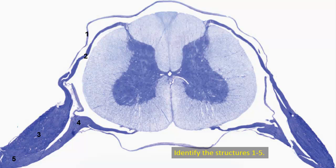Identify structures 1 to 5. This is a section of the spinal cord surrounded by the thick layer of dura mater, labeled 1. So 1 is the thick dura.